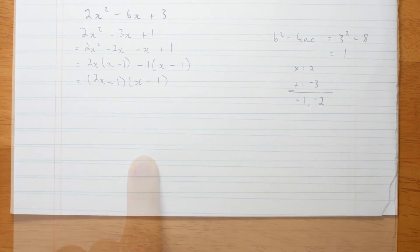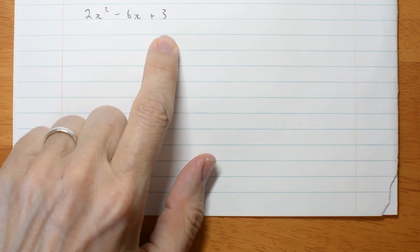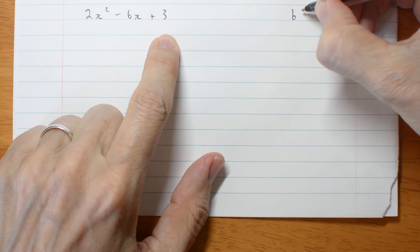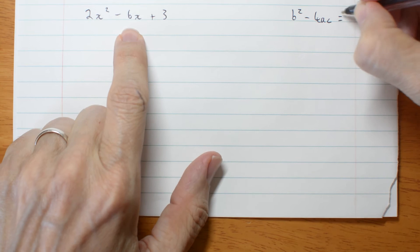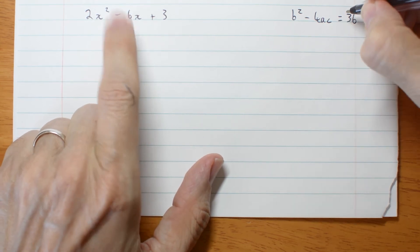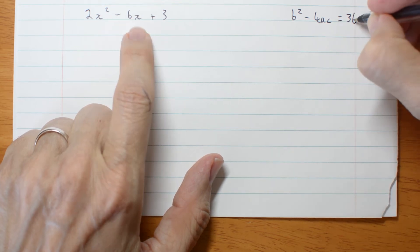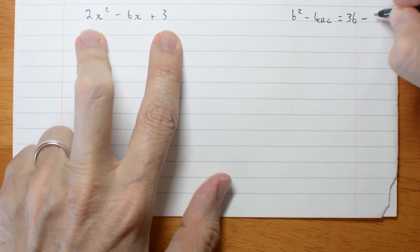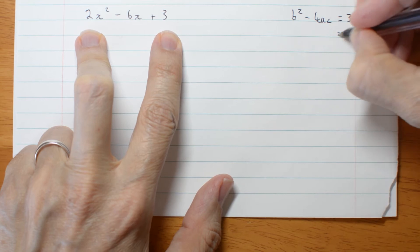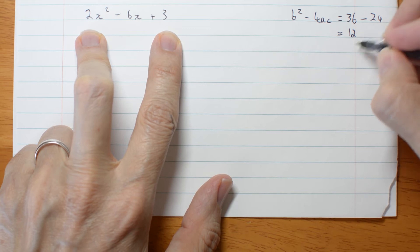Let me show you. 2x squared minus 6x plus 3. So here b squared minus 4ac is 6 squared is 36. Don't worry about the negative. Negative 6 squared is the same as positive 6 squared. 36 minus 4 times 6 which is 24. So that's positive, it's 12. But 12 is not a square, not a perfect square.